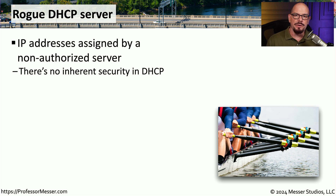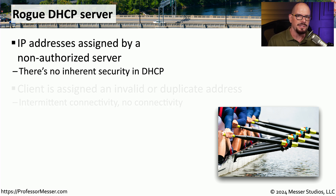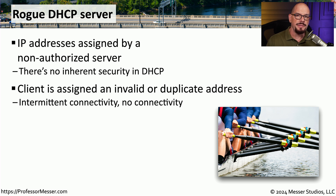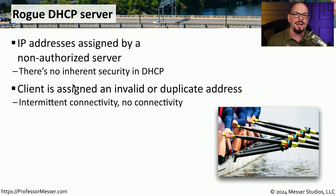But as you're probably aware, there's no security built into the DHCP protocol. A DHCP request sent by a client can be responded to by any device on the network, whether it's a legitimate DHCP server or an illegitimate one. We could build our own DHCP server, start handing out IP addresses, and cause duplicate or invalid IP addresses. People would not be able to communicate to the internet, and we could effectively shut down the network with a rogue DHCP server.